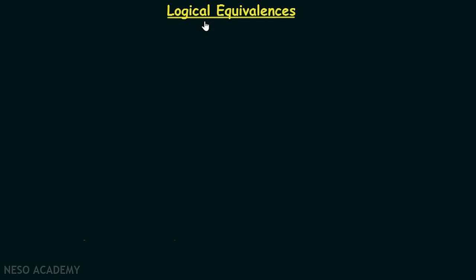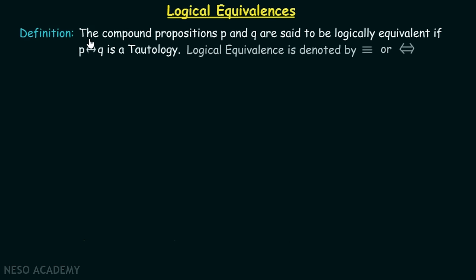In this lecture, we are going to talk about logical equivalences. The compound propositions P and Q are said to be logically equivalent if P biconditional Q is a tautology. When P is true, Q has to be true, and when P is false, Q has to be false — only then will it be a tautology. Logical equivalence is denoted by this sign or this sign.